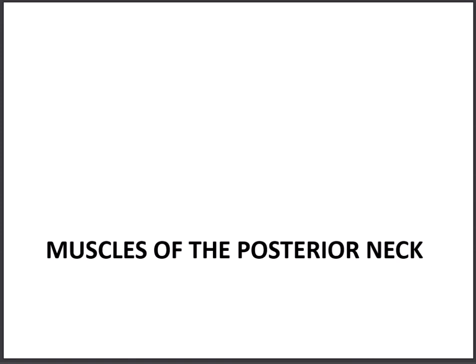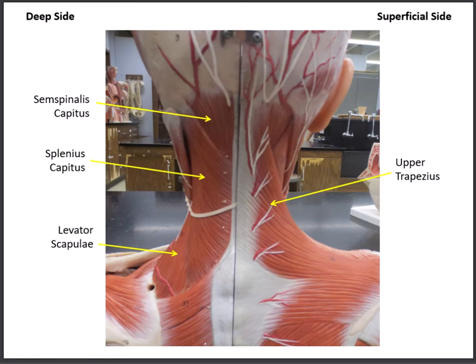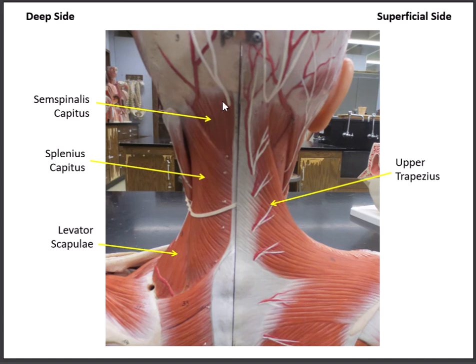We'll finish up this lab by looking at the muscles of the posterior neck. This moves us to the second column of our checklist, which we'll review more in the video on muscles of the trunk. The first muscle to look at is the upper trapezius — a superficial muscle that helps to elevate the shoulder. If you grab dumbbells and do shoulder shrugs at the gym, you're contracting your upper trapezius. The next muscle, a deep muscle that goes up to the occiput, is the semispinalis capitis.